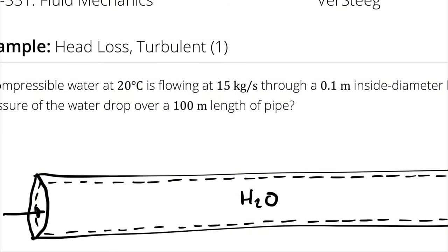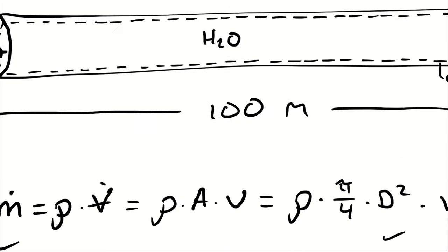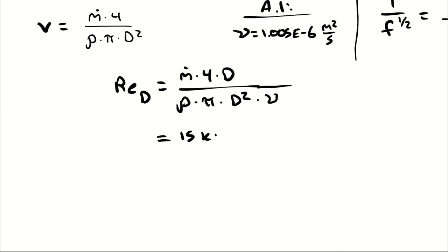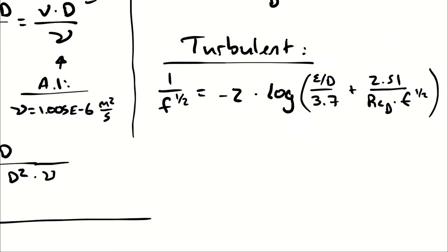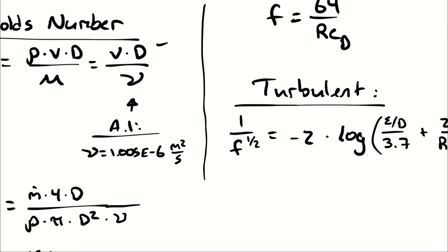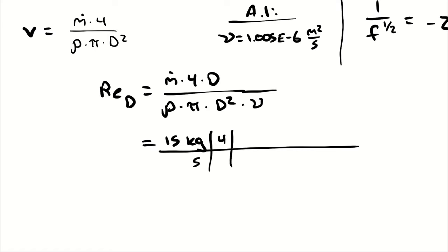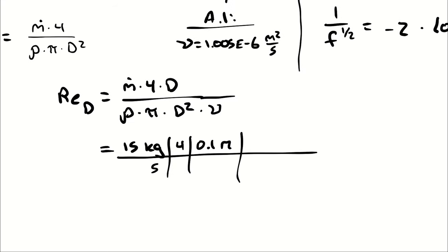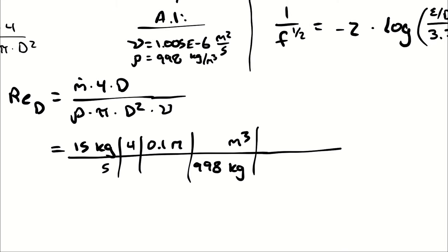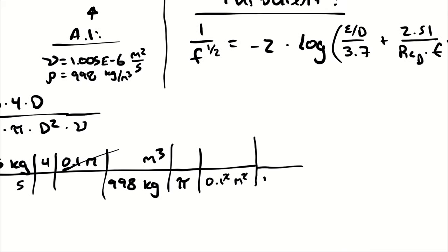So we're going to plug in 15 kilograms per second and a diameter of 0.1 meters. Furthermore, we're going to have to calculate a velocity anyway because we need it for this equation. But potato, potato. We're multiplying by 4, we're multiplying by 0.1 meters. We're dividing by the density of water, which back into table A1, we have 998 kilograms per cubic meter. And then pi, and then 0.1 squared meters squared. I'm going to cancel the squares, and then 1.005 e to the negative 6 meters squared per second.